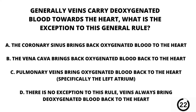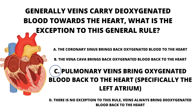Question number twelve. Generally, veins carry deoxygenated blood towards the heart. What is the exception to this general rule? A. The coronary sinus brings back oxygenated blood to the heart. B. The vena cava brings back oxygenated blood back to the heart. C. Pulmonary veins bring oxygenated blood back to the heart, specifically the left atrium. Or D. There is no exception to this rule — veins are always bringing deoxygenated blood back to the heart. Answer: C. Pulmonary veins bring oxygenated blood back to the heart, specifically to the left atrium. This is the exception to the general rule.